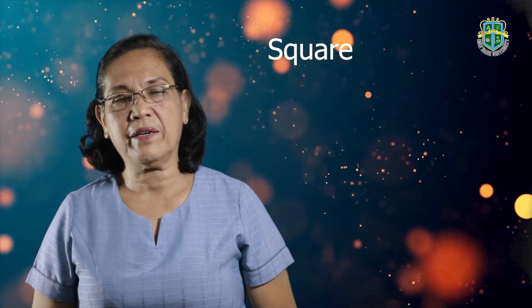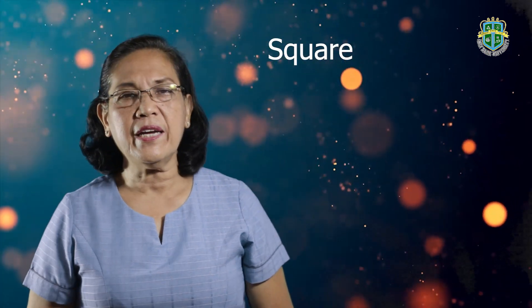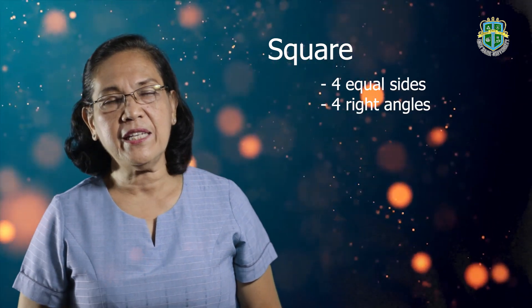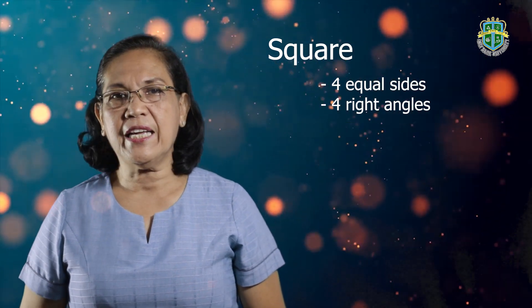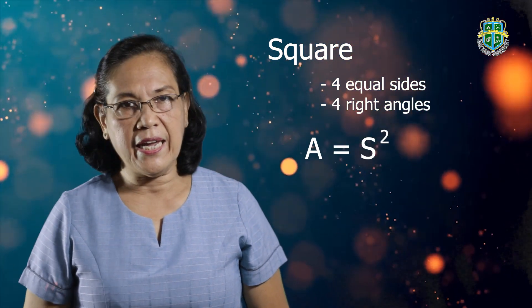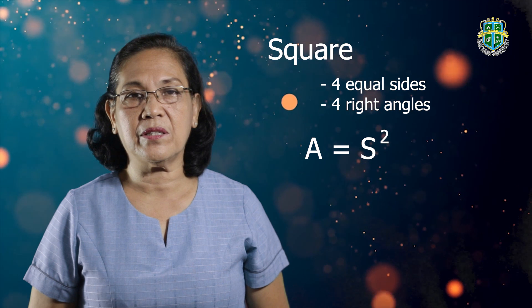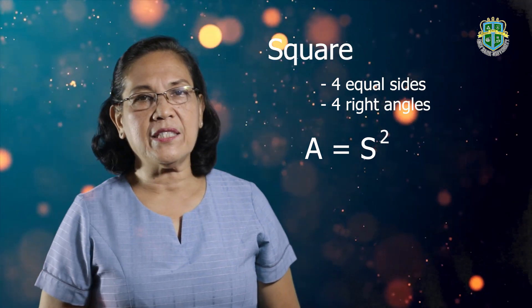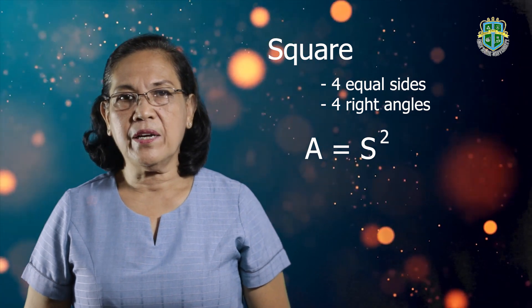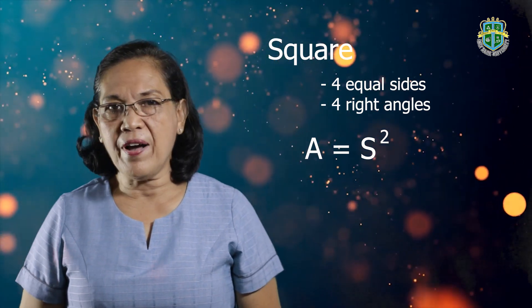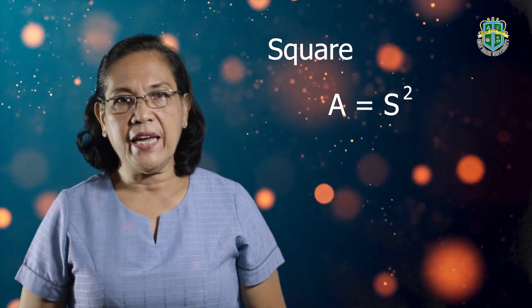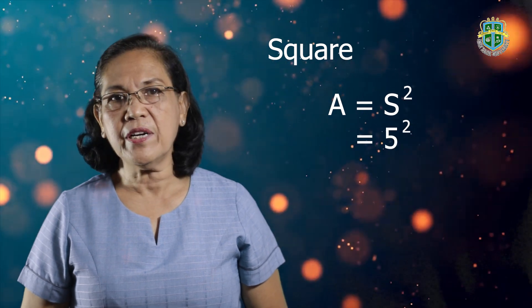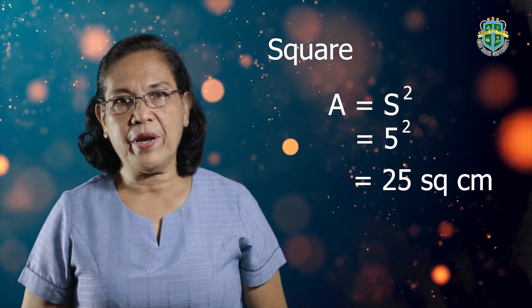Let's start with the square. A square is a polygon with four equal sides and four right angles. The formula in getting the area of a square is A equals S squared. Suppose we are asked to get the area of a square where each side measures five centimeters. We substitute five centimeters into the formula A equals S squared. Therefore, the area is 25 square centimeters.